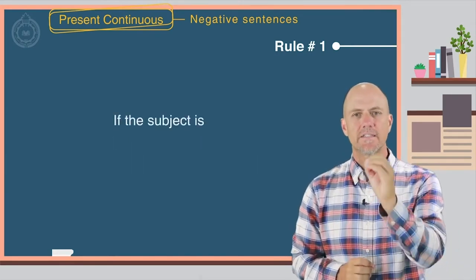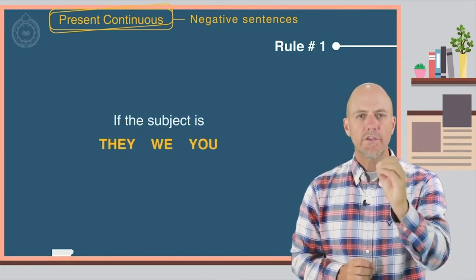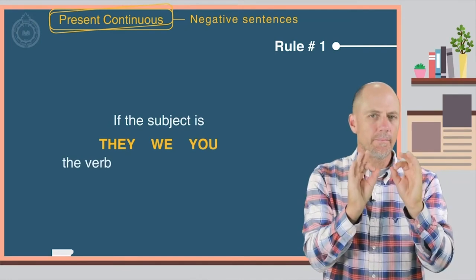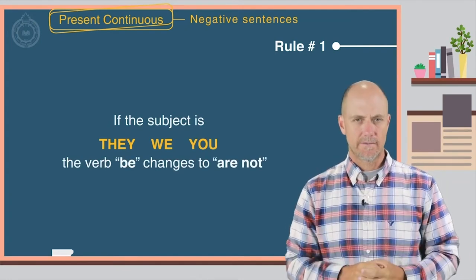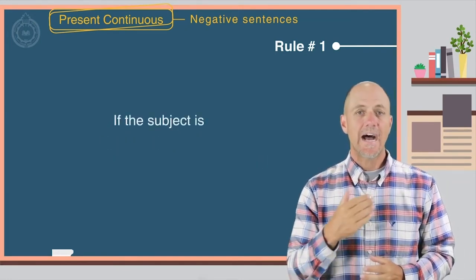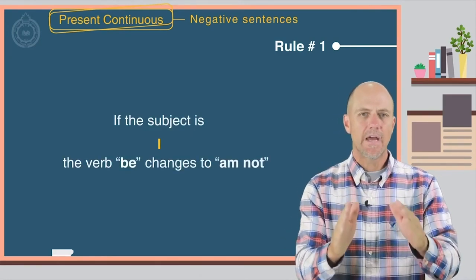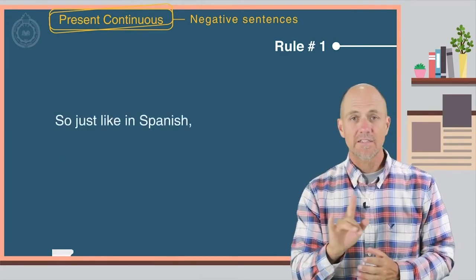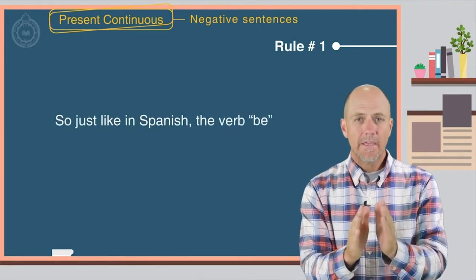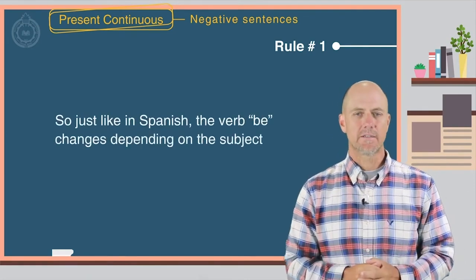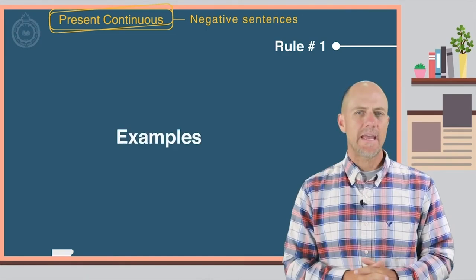If the subject is they, we, you, the verb be changes to are not. If the subject is I, the verb be changes to am not. So just like in Spanish, the verb be changes depending on the subject. Here are some examples.